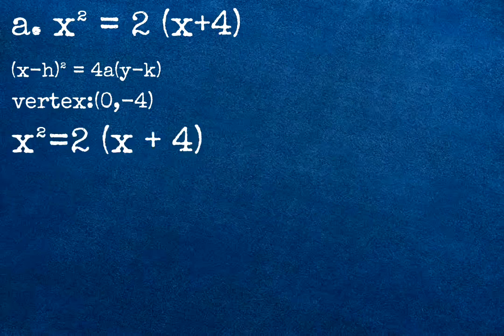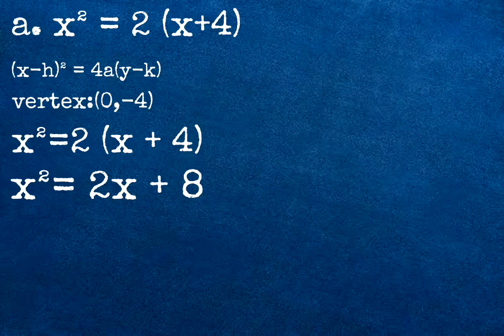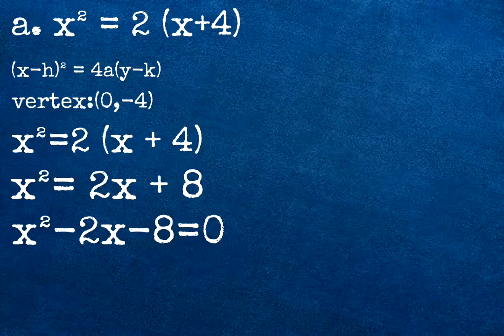To get the general form, we are going to multiply 2 to x plus 4. The answer is x squared equals 2x plus 8. Then we are going to move 2x plus 8 to the side of our x squared. The general form of our equation will be x squared minus 2x minus 8 equals 0.